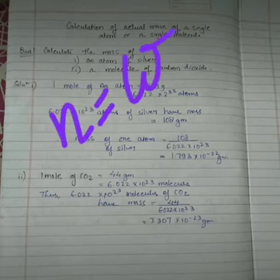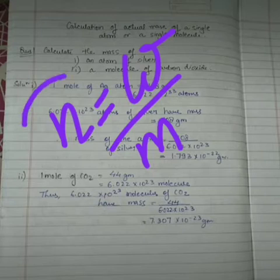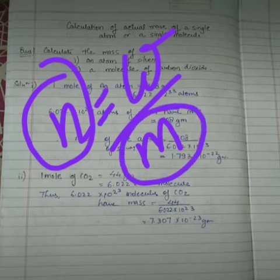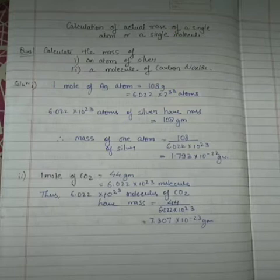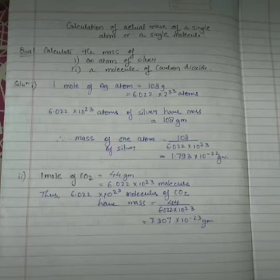Basically, the formula is: number of moles = given mass divided by molar mass. Here, for moles it is represented by Avogadro's number 6.022 × 10²³, and the molecular mass is 108 grams. Since it is asking for one atom, 108 is divided by 6.022 × 10²³.